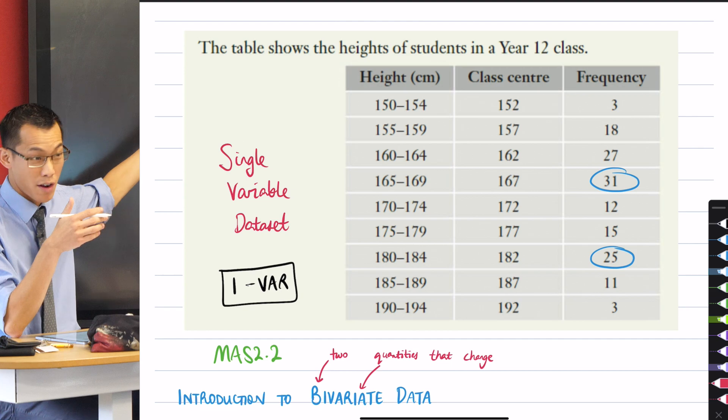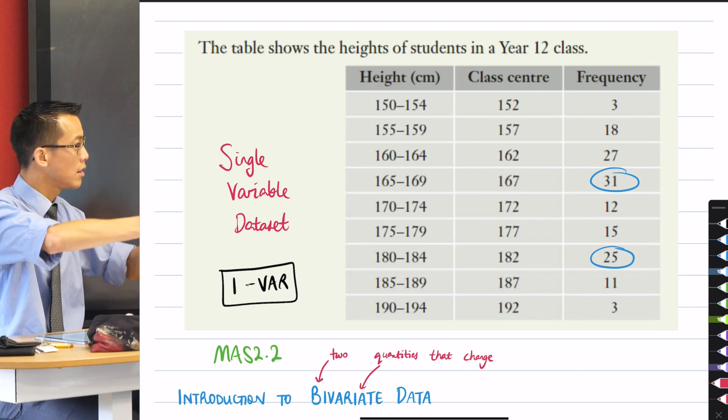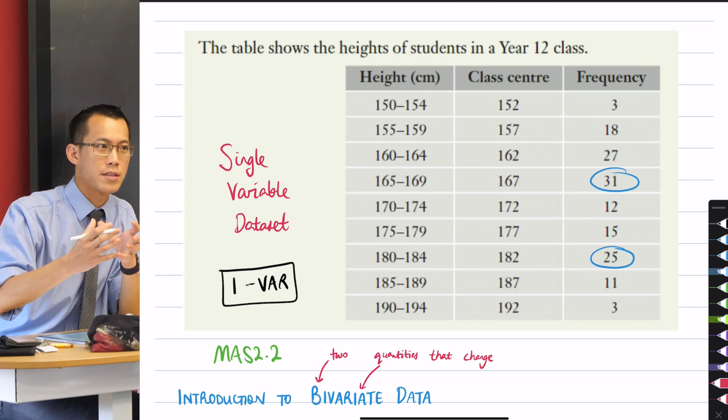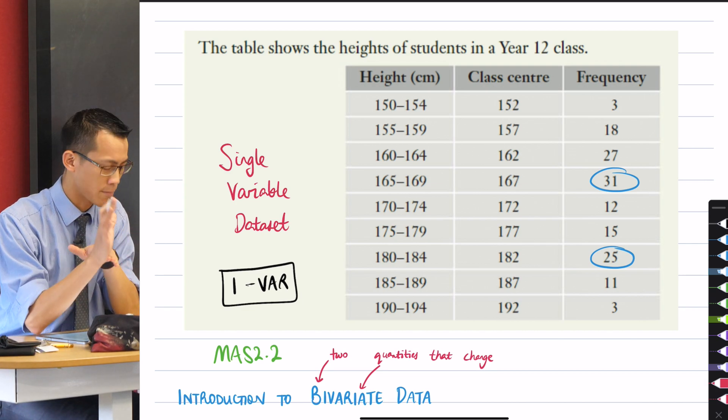In this particular example, it would be less meaningful because everyone's roughly the same age in year 12. But maybe if I broadened out to the entire school, I now have two data points that are worth comparing to each other. Does that make sense?